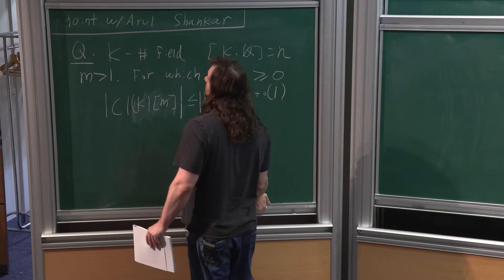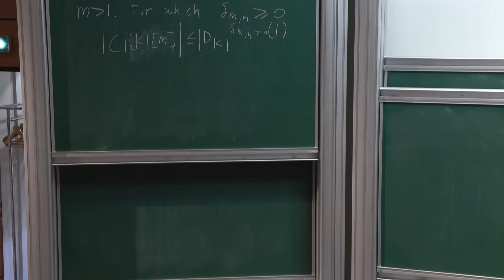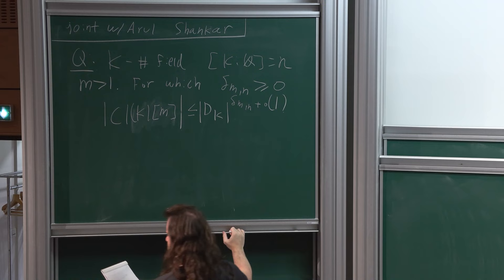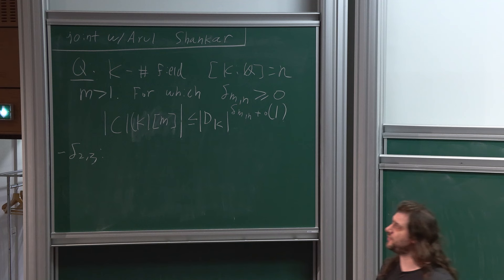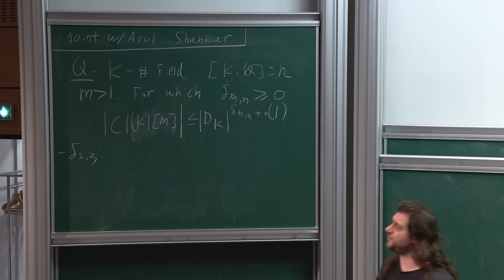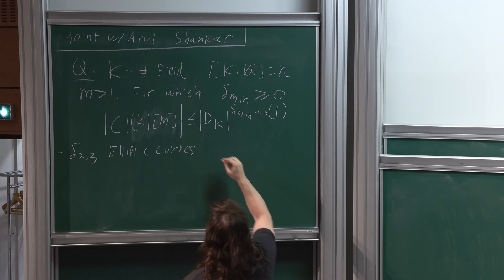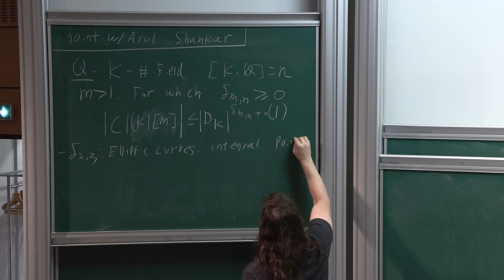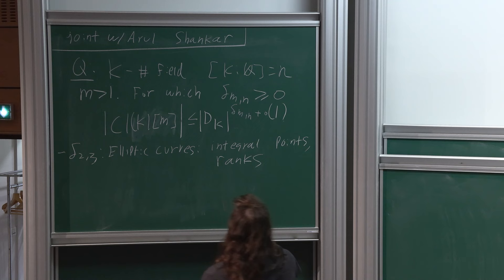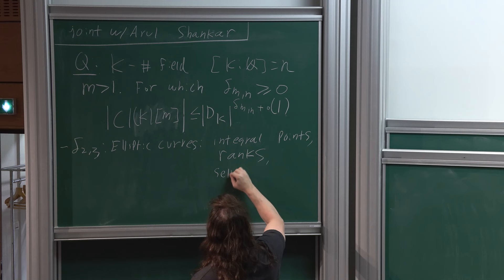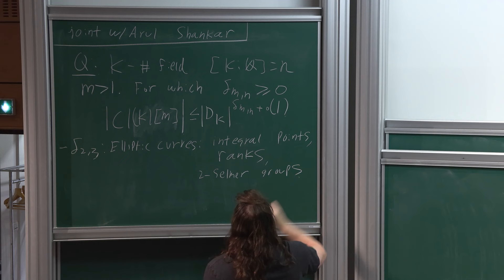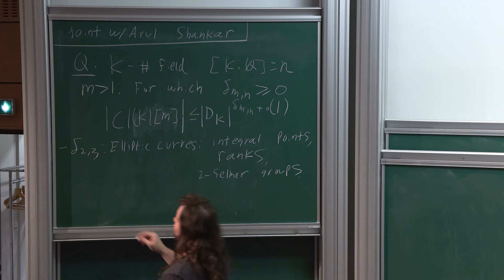Why would one be interested in this question? It turns out that quantities like this come up from time to time in algebraic and analytic number theory. To give a few of the best known examples: if you look at δ_{2,3}, meaning 2-torsion in class groups of cubic fields, this relates to elliptic curves—both the question of bounding integral points on elliptic curves and giving upper bounds for ranks of elliptic curves over Q together with their Tate-Shafarevich groups.